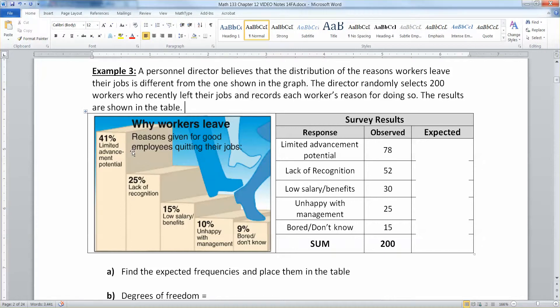So we think that 41% are going to leave because of limited advancement potential, 25% are going to leave because of lack of recognition, 15% are going to leave because of low salary or benefits, 10% leave because they're unhappy with management, 9% leave because they are bored. So there's the percentages that you think are going to happen, which is technically your null hypothesis. Now, this personnel director went and asked 200 people and got these responses. And notice I found the sum just to make sure. And indeed, it's 200 down here.